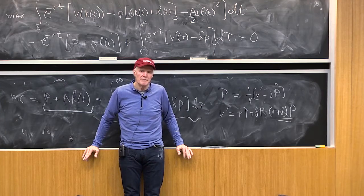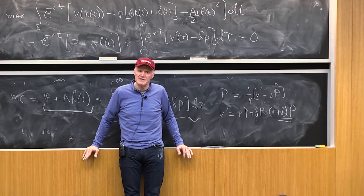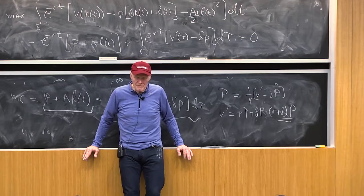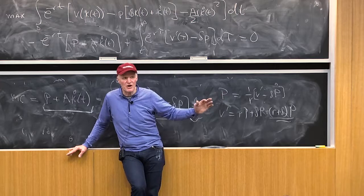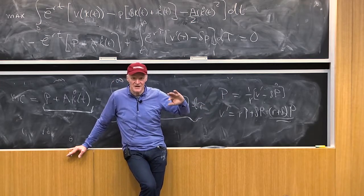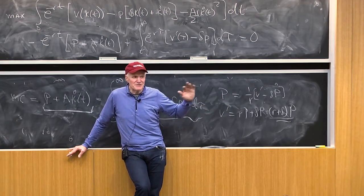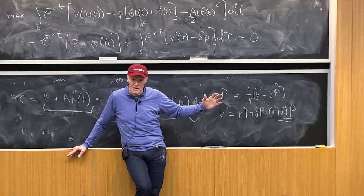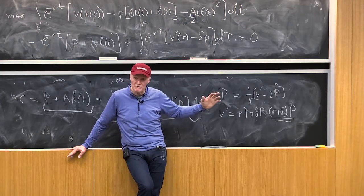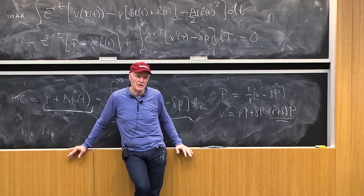Alright, people understand how that works? So that's the difference between this adjustment cost model. Sometimes people talk about it, I think the terms people use are internal adjustment costs versus external adjustment costs. But the real economics is really about that whole question: do I have a rising supply of net investment or a rising supply price of gross investment? That's really the difference between the two models.